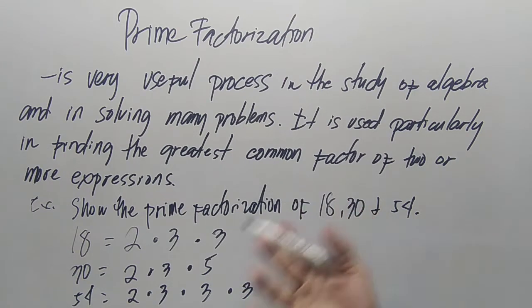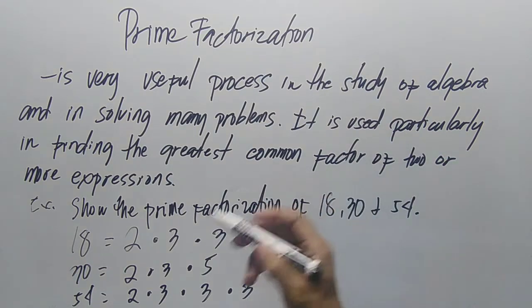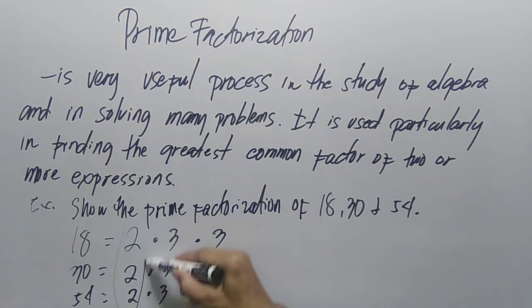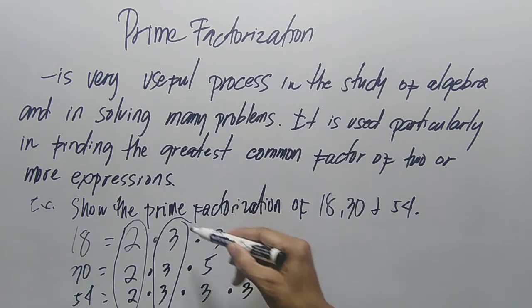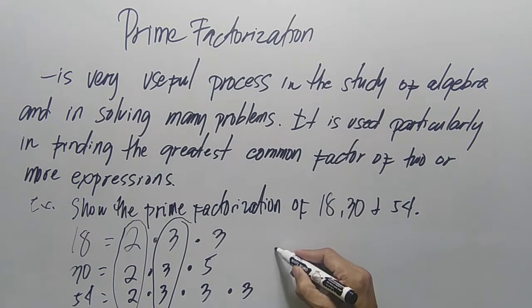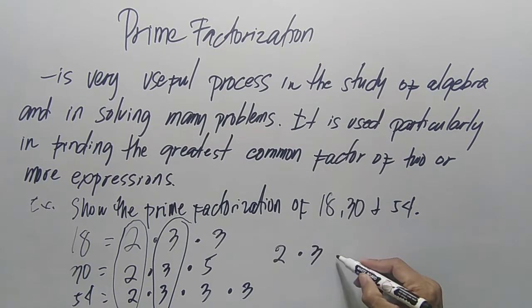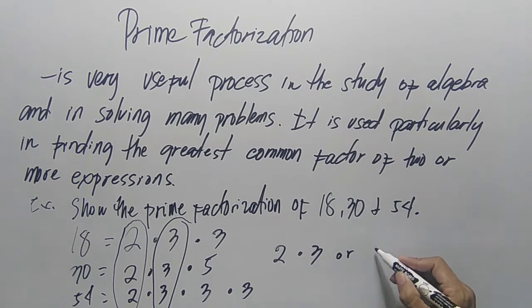Now let's find the greatest common factor of these numbers. 2 is common, 3 is also common. Therefore, the greatest common factor is 2 times 3, or that is equal to 6.